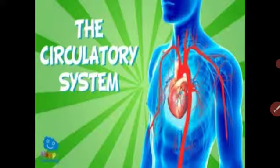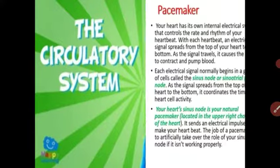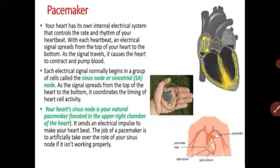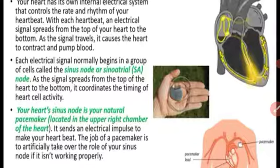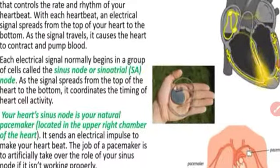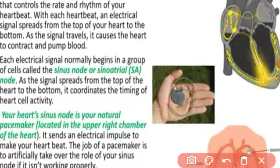In this video, we are going to study about the pacemaker and blood vessels. The pacemaker is the natural device which is present in our heart, and due to the pacemaker, our heart contracts and relaxes. The pacemaker is a natural device present in the right auricle, near the opening of the superior vena cava. This is our natural pacemaker — this yellow dot — and it is also called the SA node.